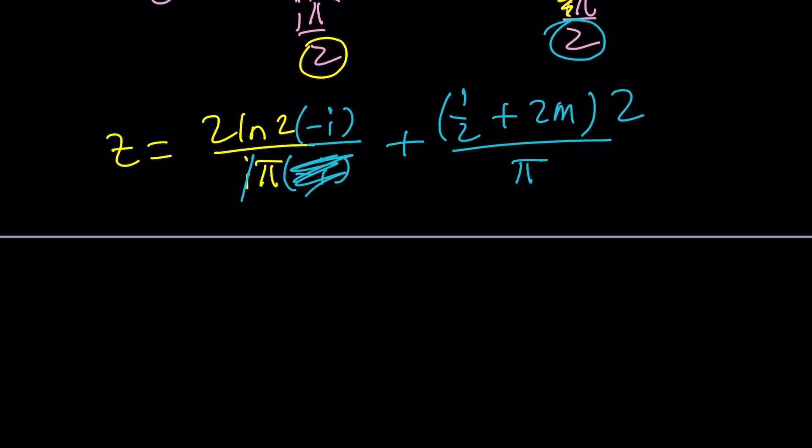Let's go ahead and rearrange this a little bit. I can write this as follows. First of all, if you distribute to 2, you're going to get 1 plus 4m divided by pi.